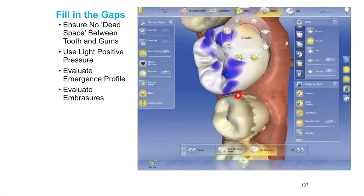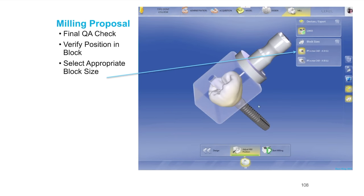We want to make sure we occupy all the space so there's no area for food to collect if possible. Get a nice, natural-looking crown as much as possible. Oftentimes that requires us to sacrifice a little bit of this gingiva — whether surgically, through our design, or with a handpiece for a gingivectomy. We want to create a nice long-lasting restoration that will perform well long-term rather than something that just gets the job done.